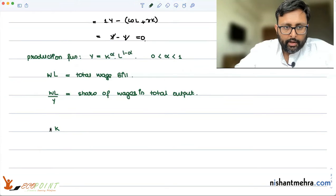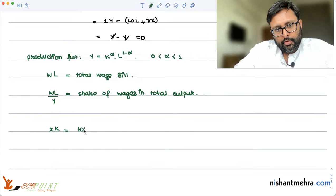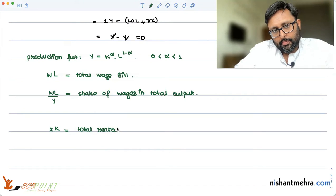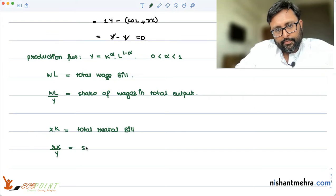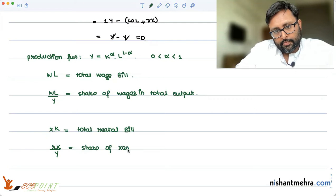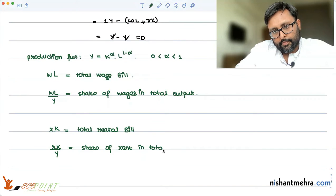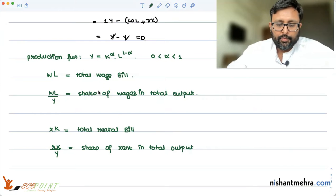Similarly, K is the capital which is employed and R is the rental rate per unit of capital, making RK the total rental bill. RK upon Y is the share of rent in total output.